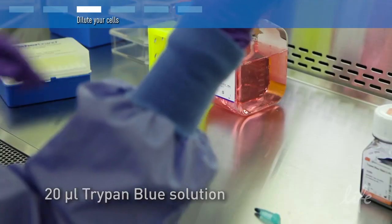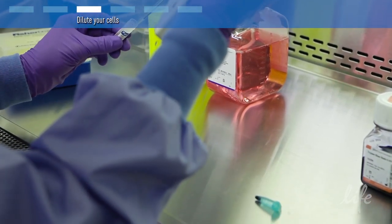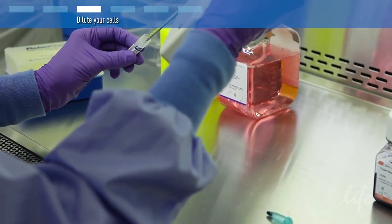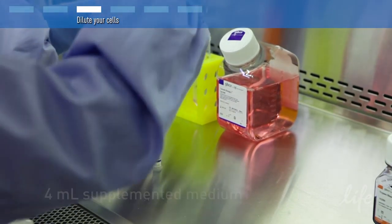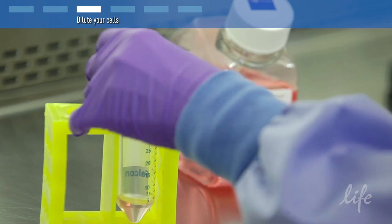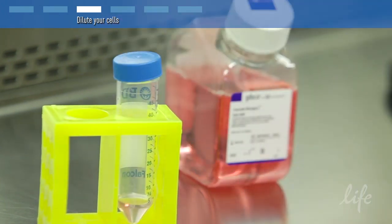Use the same 1 ml pipette to remove the remaining cells from the original cryovial and dilute into 4 ml of supplemented medium in a 50 ml conical tube. This step reduces the cell's exposure to DMSO in the cryomedia.